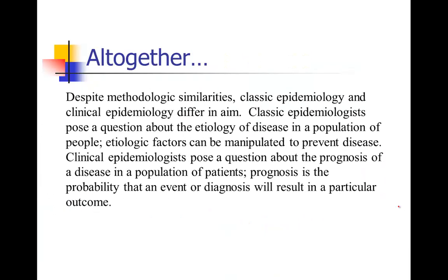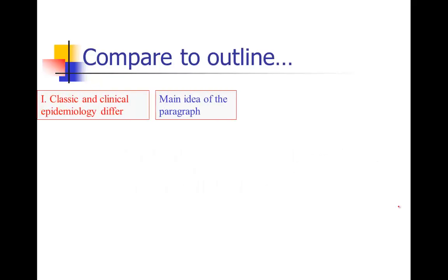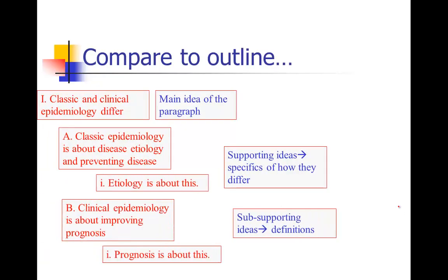Pulling the whole thing together: 'Despite methodologic similarities, classic epidemiology and clinical epidemiology differ in aim. Classic epidemiologists pose a question about the etiology of a disease in a population of people' — I stuck in the little definition of etiology with a semicolon: 'etiologic factors can be manipulated to prevent disease.' Then: 'Clinical epidemiologists pose a question about the prognosis of a disease in a population of patients' — notice I still don't need a transition there. With a semicolon, I add the definition: 'Prognosis is the probability that an event or diagnosis will result in a particular outcome.' We really streamlined that paragraph, used the parallel sentence structure to eliminate transition words, and can check off all pieces against our outline: main idea, the two definitions, how they differed, and definitions of both terms.